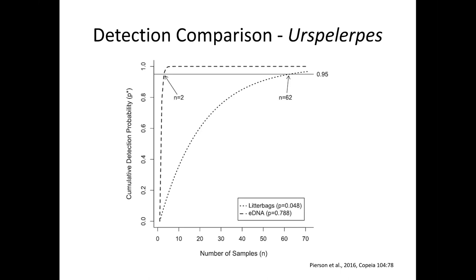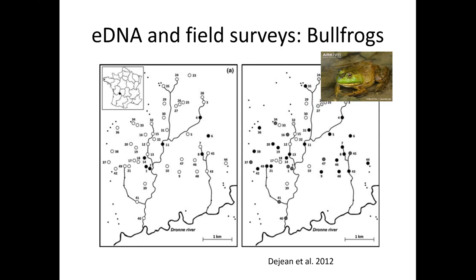An even bigger difference was seen in a study by Todd Pearson on the very small patch-nosed salamander, Eurycea pterophila, comparing eDNA to leaf litter bags in aquatic-breeding plethodontid headwater streams. eDNA showed very high detection probability, while leaf litter bags showed much lower detection. To achieve 95% detection probability, you'd need 62 nights of litter bag surveys versus just two eDNA samples. In the bullfrog system as well, eDNA detected far more positive sites than traditional survey methods. That said, eDNA isn't always more effective — for highly detectable species like spring peepers, for instance, field surveys are perfectly adequate.